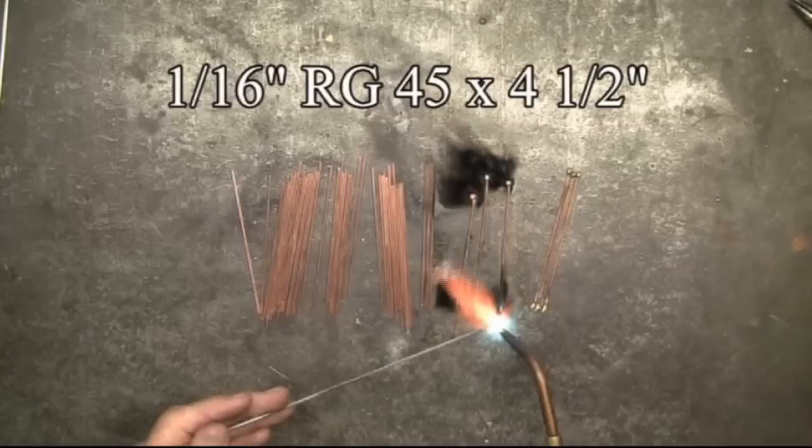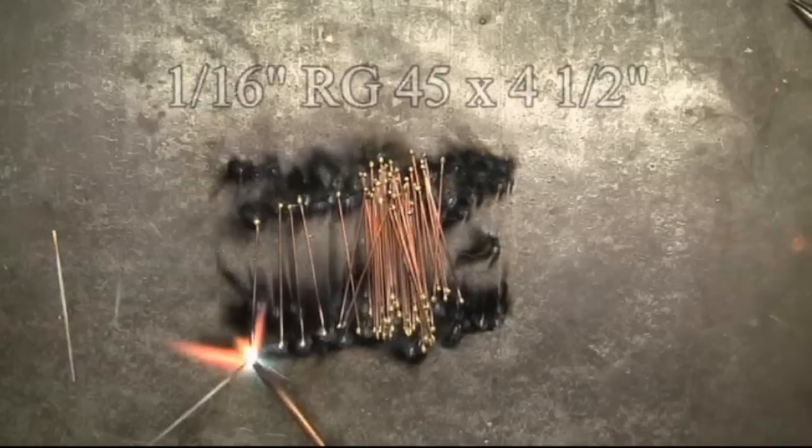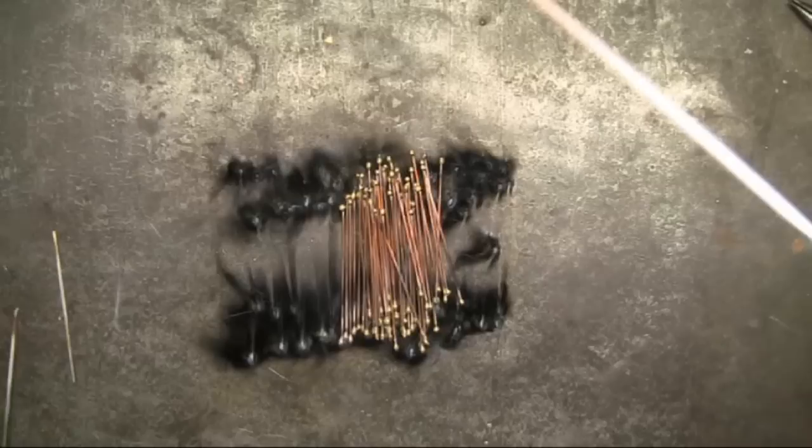For the leaf stems, I'm using 1/16th inch RG45 and I'm putting a dab of bronze on the end of each rod. These rods are 4.5 inches long.